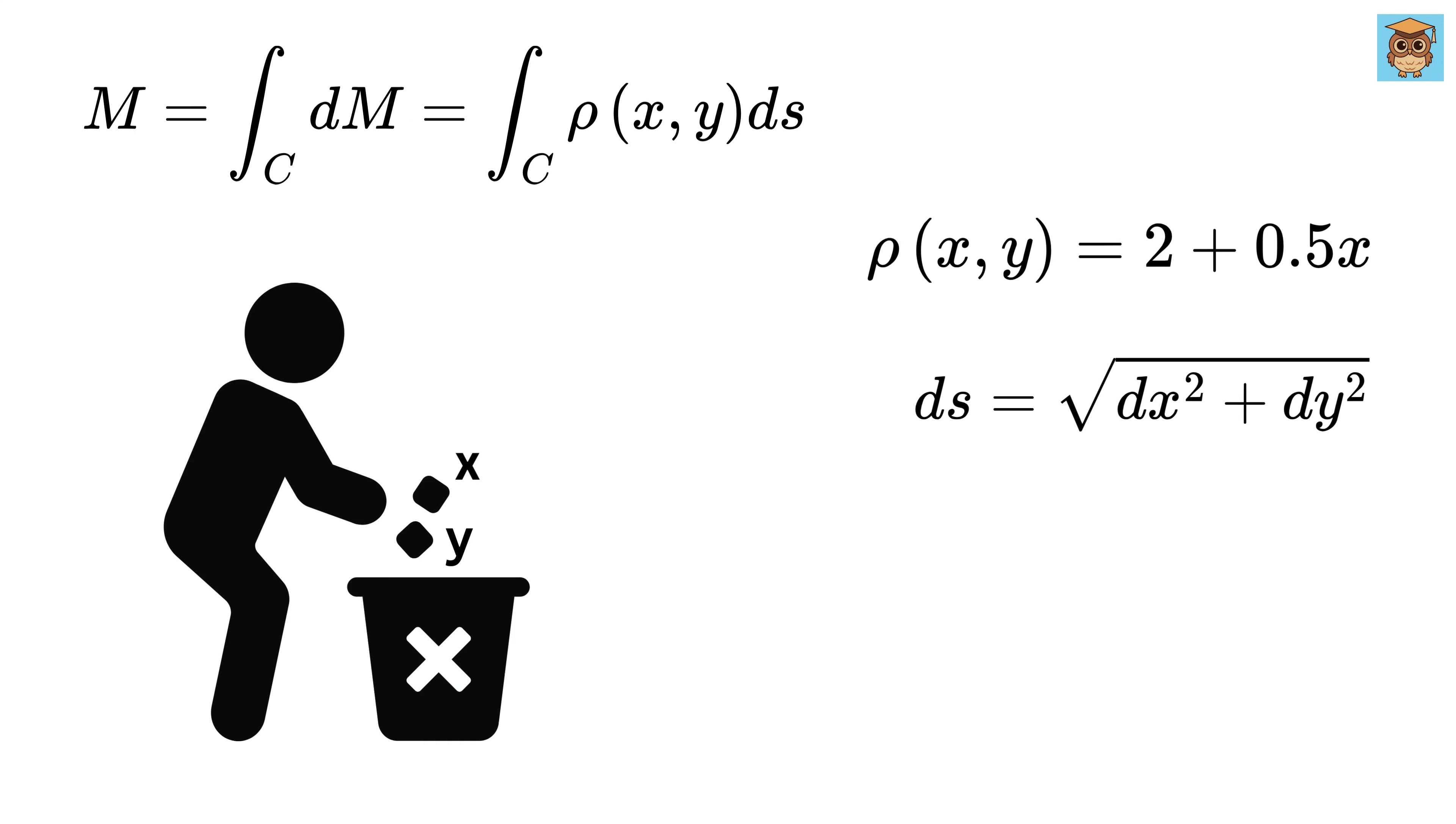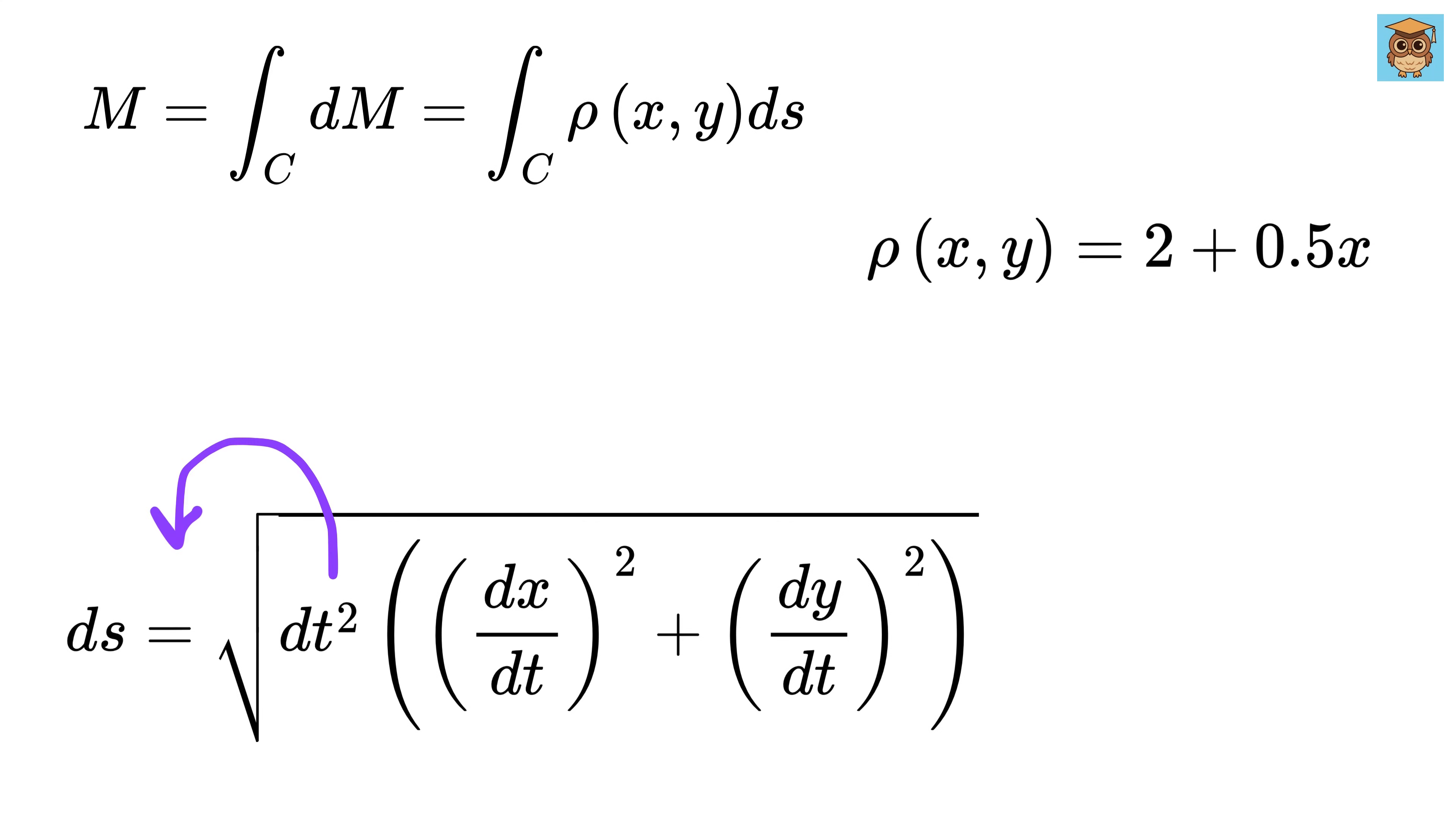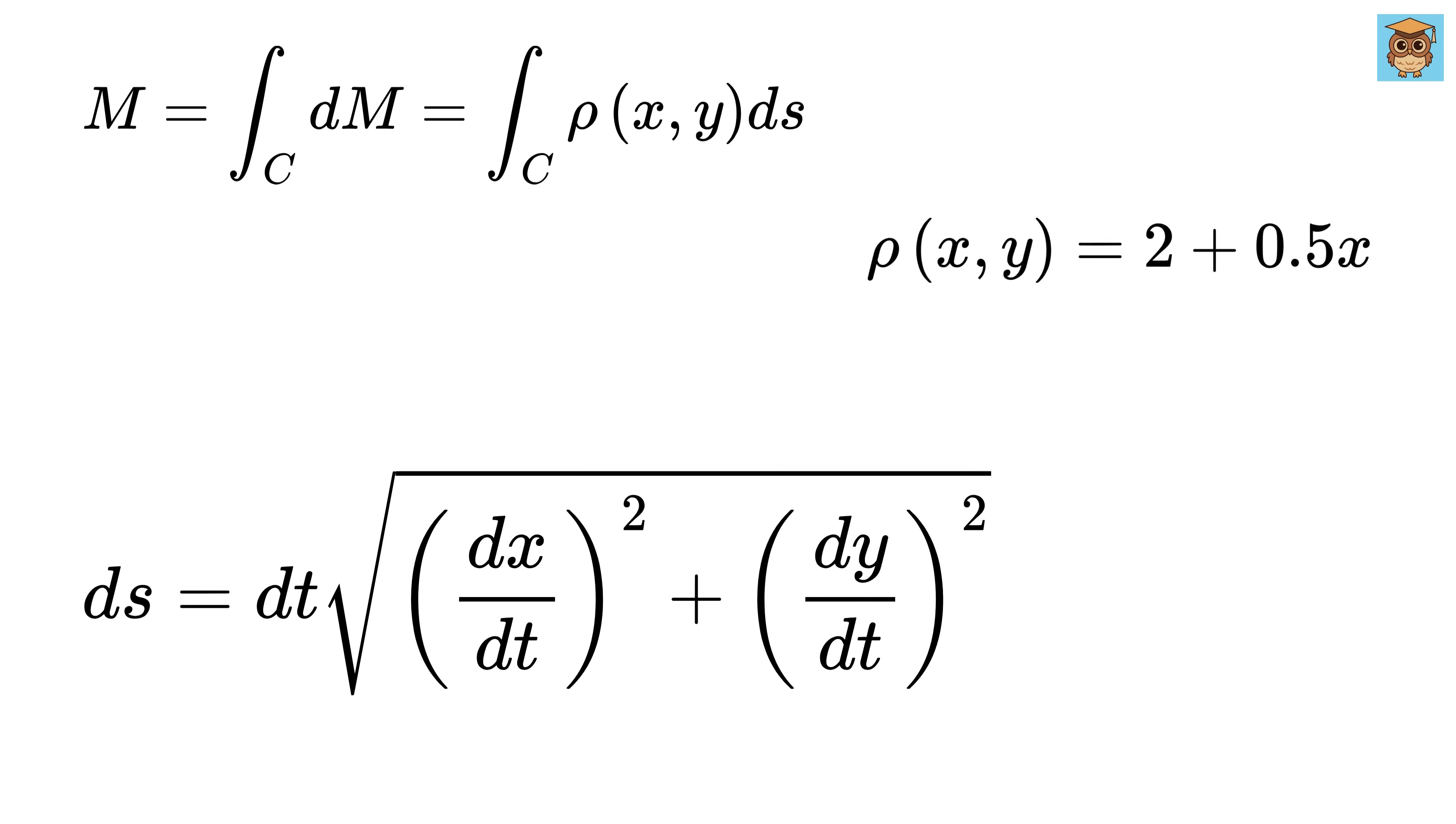Now, here comes the magic. I want to eliminate two variables and bring just one variable into the picture, say, t. This is called parametrization of the curve. Inside this square root, multiply and divide by dt square like this. Now, separate this dt square of the denominator like this. Then bring this dt outside the square root to get ds as dt times square root of this. So if we can somehow represent x as a function of t and y as some other function of t, then we can find dx by dt and dy by dt and solve this integration easily.